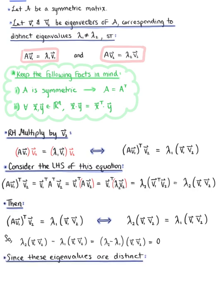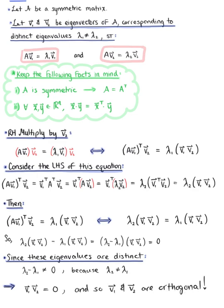Since these eigenvalues are distinct, we know that λ₂ − λ₁ cannot equal zero because λ₂ cannot equal λ₁. Therefore, by default, the dot product of v₁ with v₂ must equal zero. By definition, v₁ and v₂ are orthogonal, which is exactly what we wanted to show. We have officially verified that if A is a symmetric matrix, then any two eigenvectors corresponding to distinct eigenvalues are orthogonal, which completes our proof.